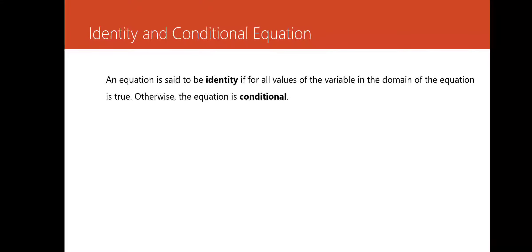Let's now proceed to identity and conditional equations. An equation is said to be an identity if for all values of the variable in the domain of the equation it is true. Otherwise, the equation is conditional. The domain must be the set of all real numbers for an equation to be an identity equation; if otherwise, then it is a conditional equation.